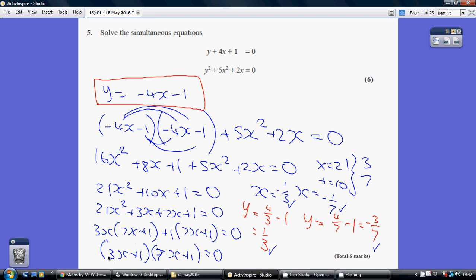So what value of x makes this bracket 0? That's minus 1/3, and this bracket 0, minus 1/7.